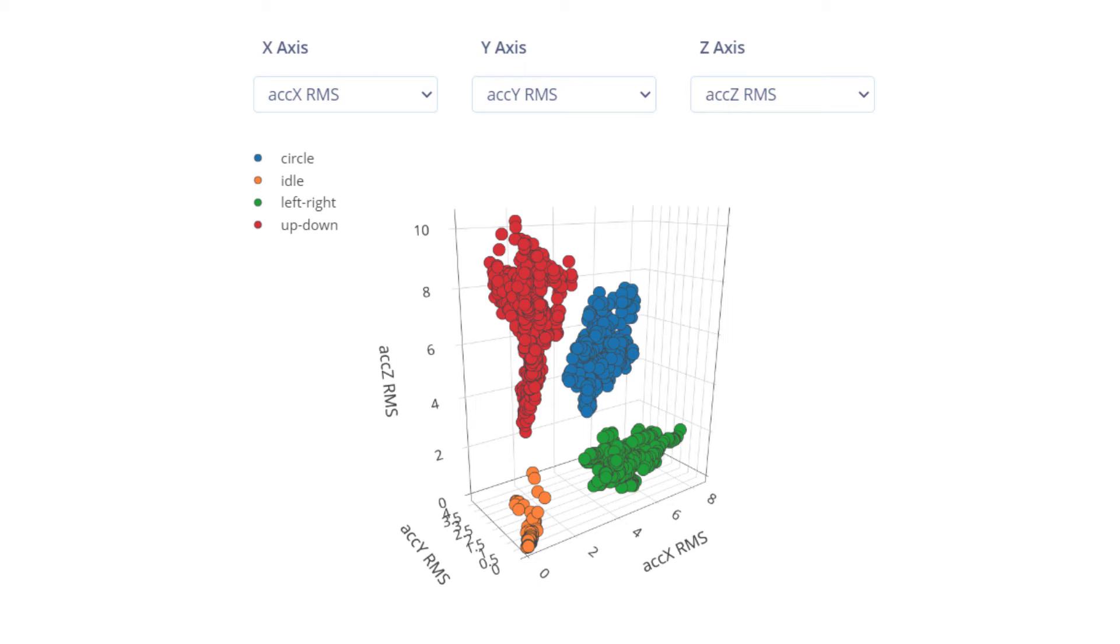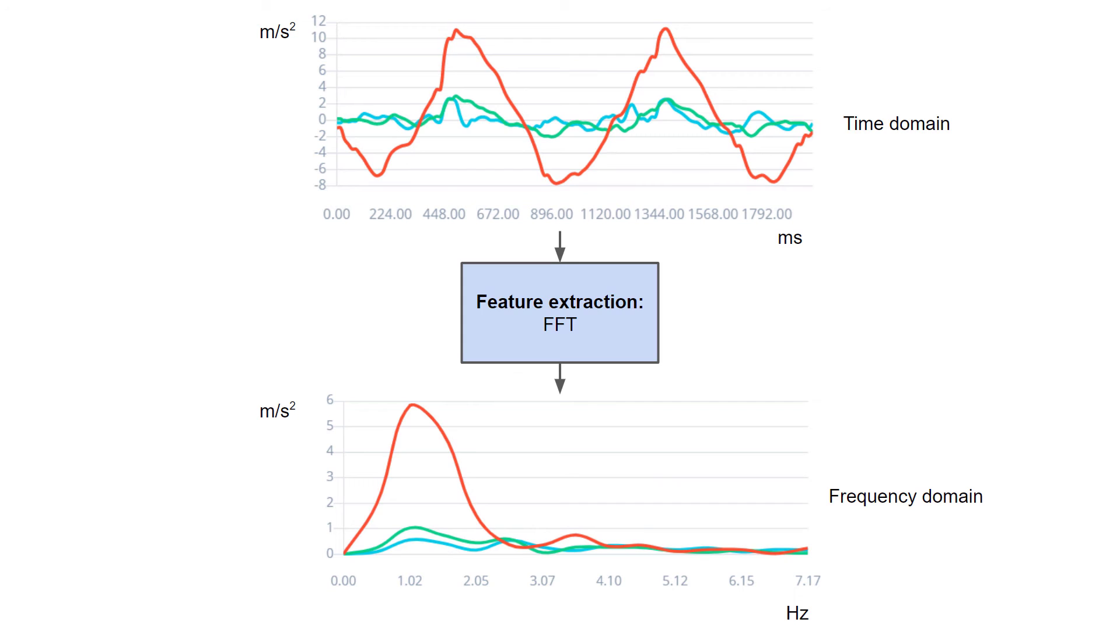But we can take this a step further. One common technique when looking at vibration or motion data is to take the Fourier transform of that data to get information about it in the frequency domain. We won't go into detail about how to calculate the Fourier transform, but know that it's a way to break apart a signal into its various frequency components. The fast Fourier transform or FFT is optimized for discrete sample data like what we have here.